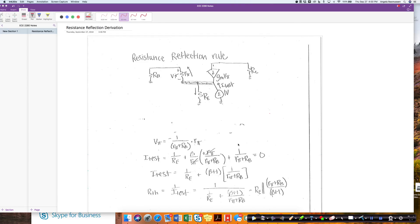This is the derivation of the resistance reflection rule when I am located at the emitter side. That means when I am at my emitter, which is here, I can find the equivalent resistance. To do that,